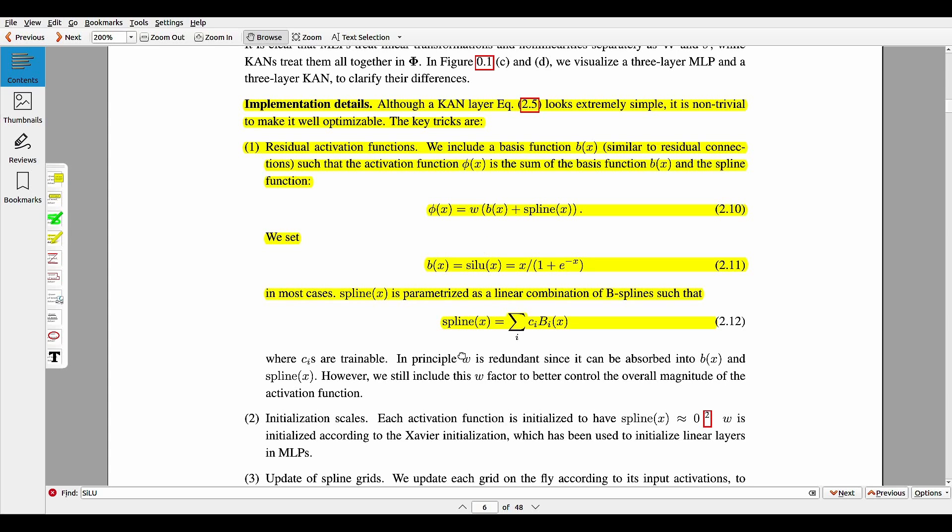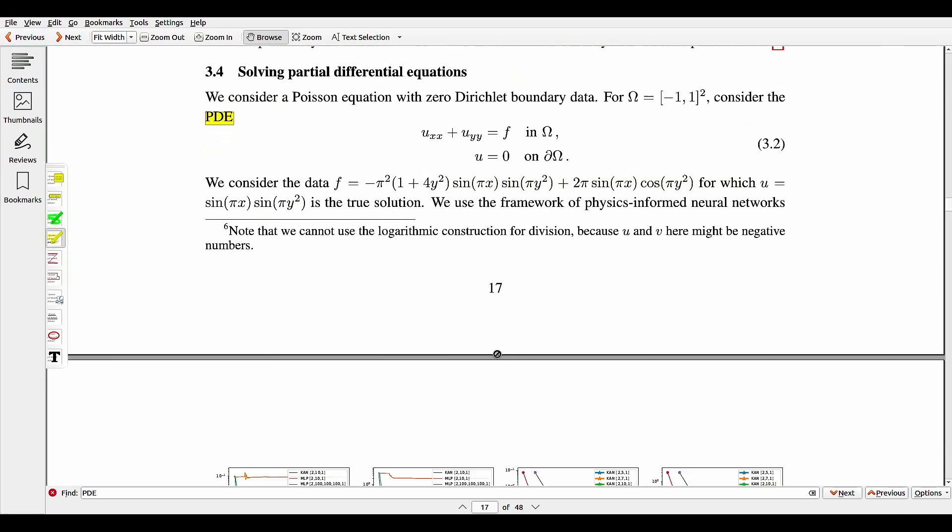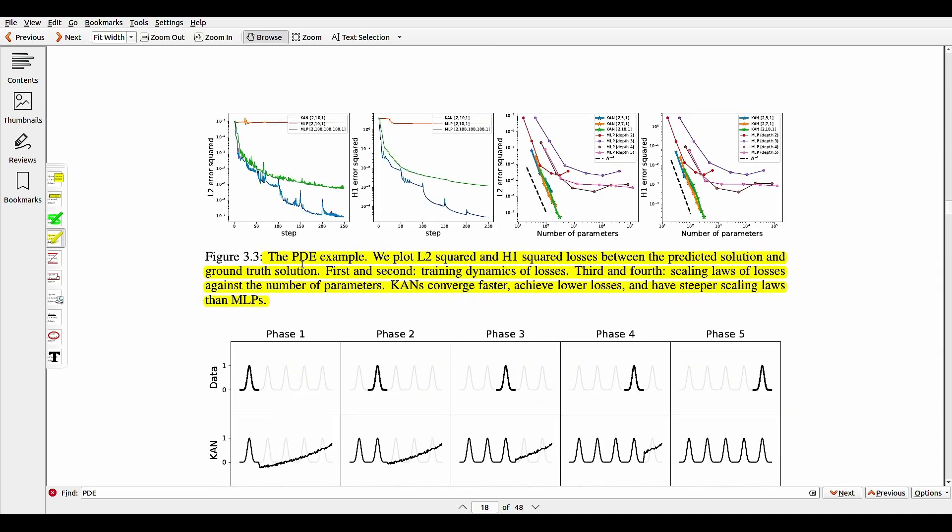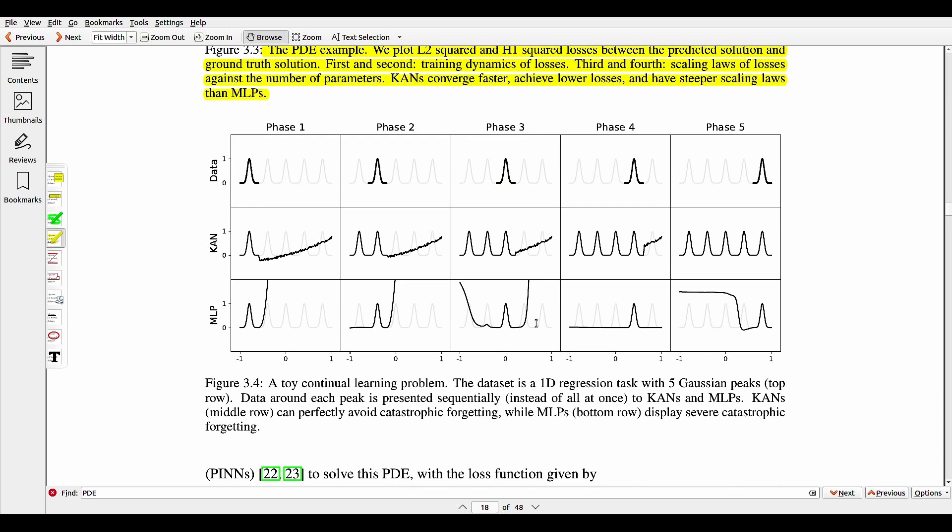The key tricks for implementation for optimizing CANs are about using residual activation functions that are a sum of basis functions, for example SILU, and the learnable splines. About the performance of CANs versus MLPs on various experiments including regression, PDE that is partial differential equation solving, and continual learning, CANs demonstrate superior accuracy and parameter efficiency compared to MLPs.